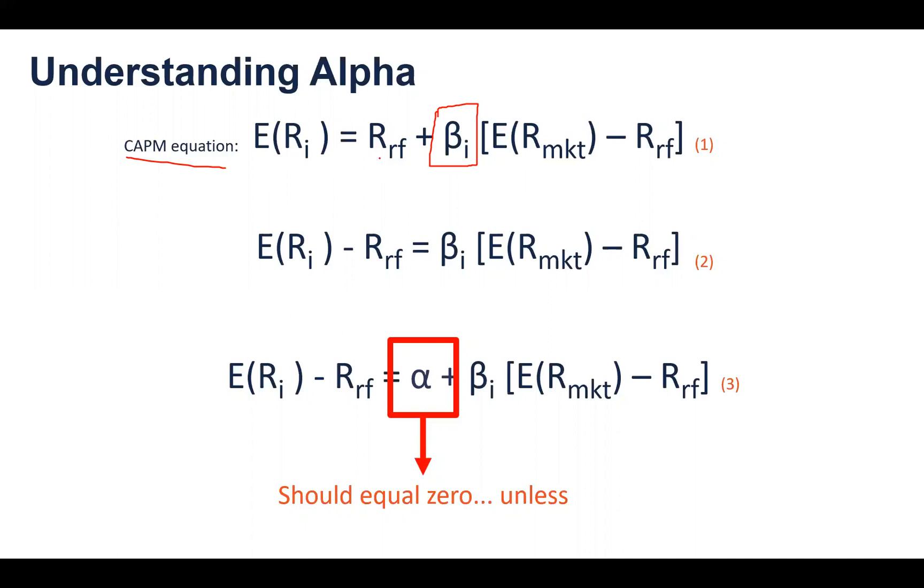On equation two, we just put risk-free here to the left side. So we have here this first part, which is the excess return or excess expected return of asset Ri, which is equal again to beta, all that matters, the adjustment of the return of the market above the risk-free asset.